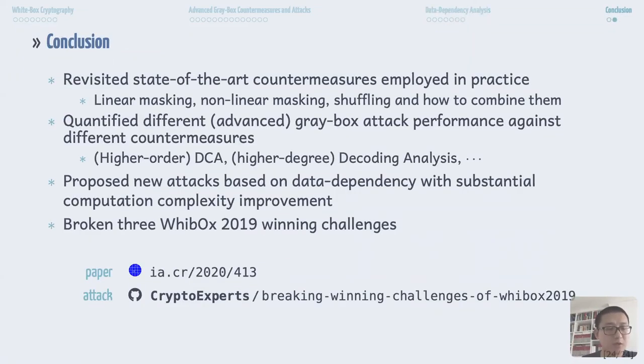Finally, the conclusion. So in this article we revisited all the state-of-the-art countermeasures employed in practical white box implementation. We also quantified the different gray box attacking policies and compared their performance against different countermeasures. We propose new attacks based on data dependency analysis which substantially improve the computation complexity of the existing advanced attacks. And we use this attack to break three winning white box implementations from WhibOx 2019. Finally, the paper and the code are both online. Thank you.